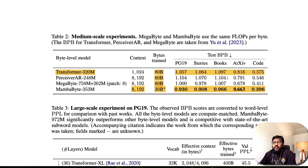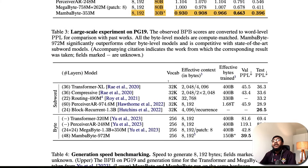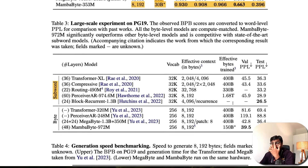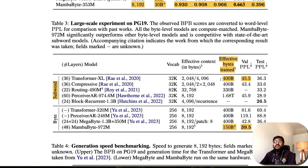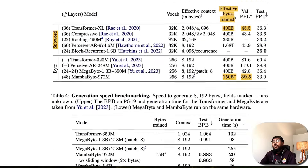Looking at BPB — bits per byte — it's almost a tongue twister. Comparing MambaByte with other subword-based Transformer models: MambaByte trained on 150 billion effective bytes scores a perplexity of 39.5, which is significantly lower than Transformer XL which scored 45.5 on the validation dataset with 400 billion bytes. That's a major win for MambaByte.